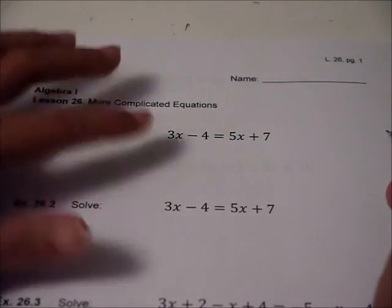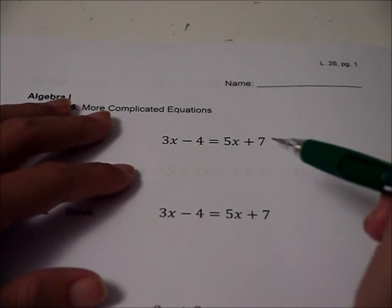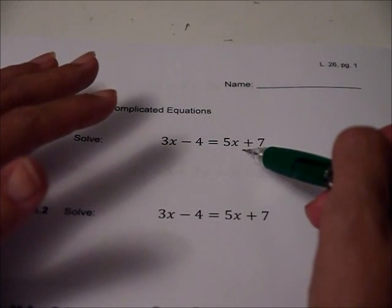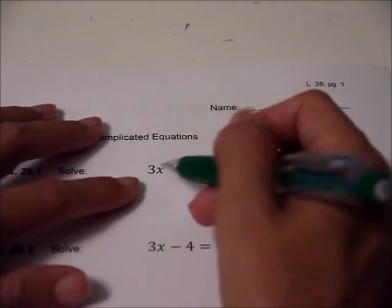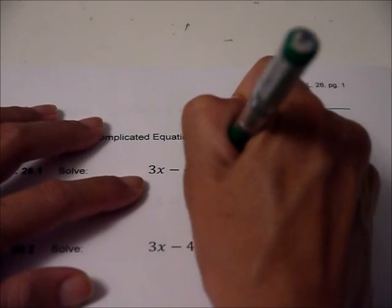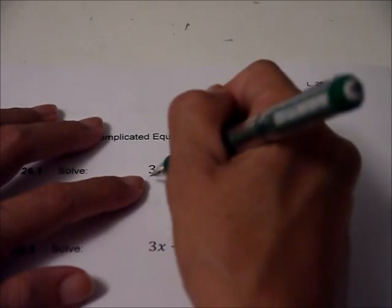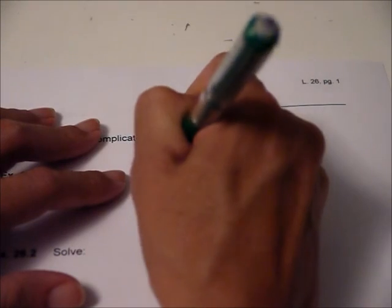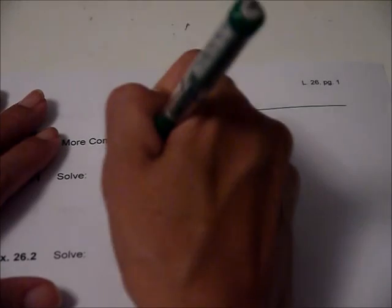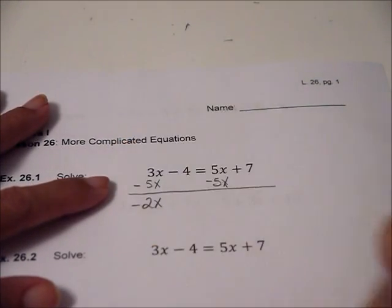So I always like to get the x's on the same side first. They see each other across that equal sign, they're like, oh, we need to get together. I'll do it the way a lot of people start, and then I'll tell you how I kind of think ahead. I want the x's over here, so let's get rid of the x here. I'm going to subtract five x's. Remember, like terms. So if I subtract five x from this side, I have to subtract it from this side, but I do not subtract it from the four because they are not like terms.